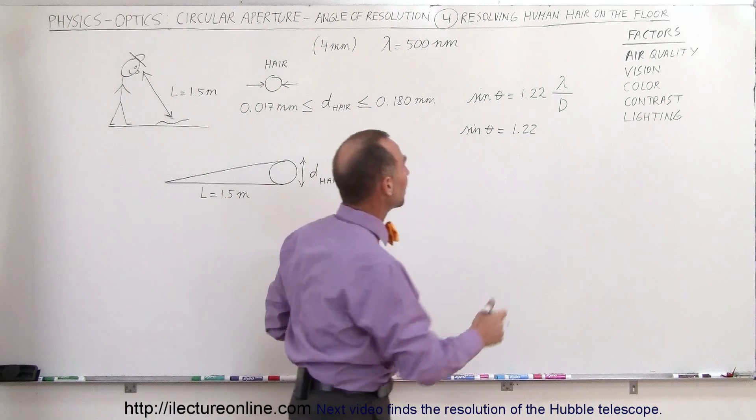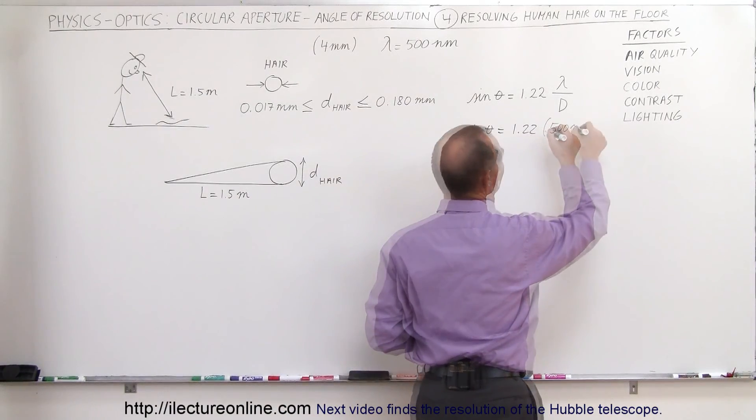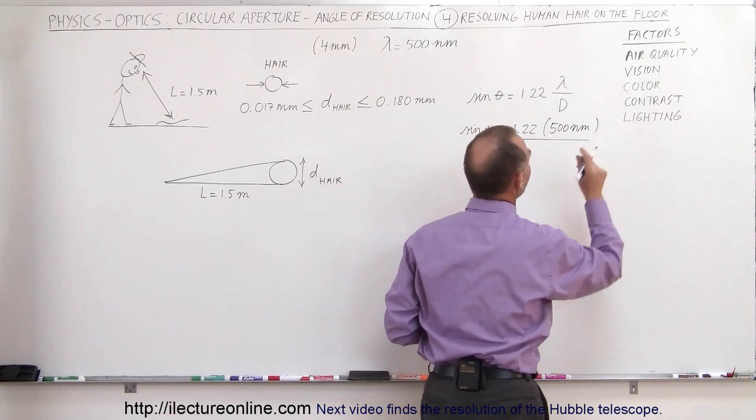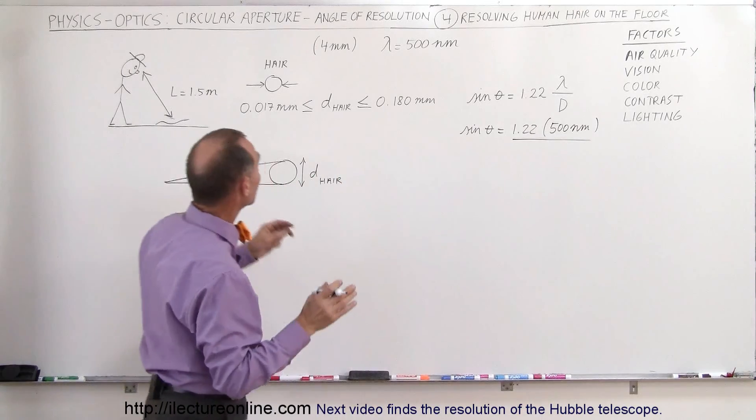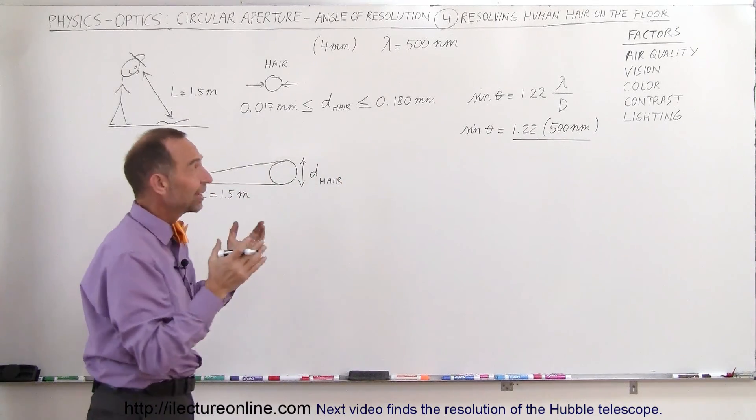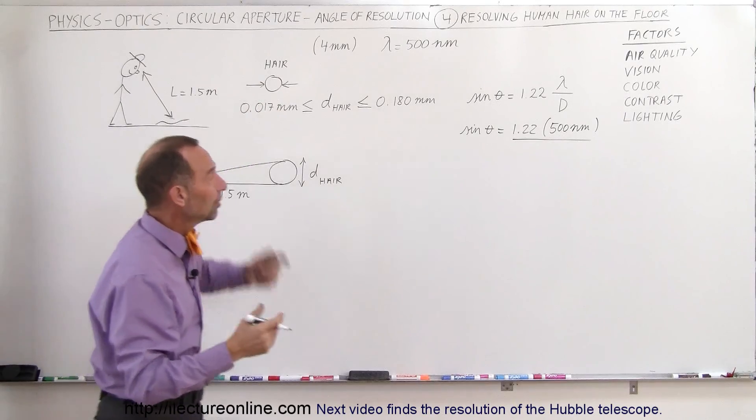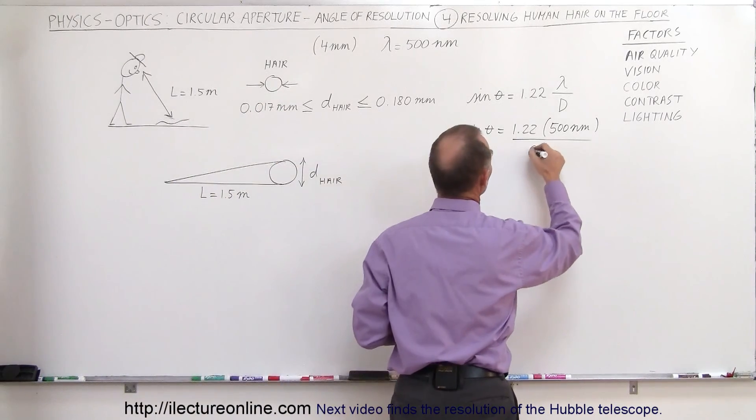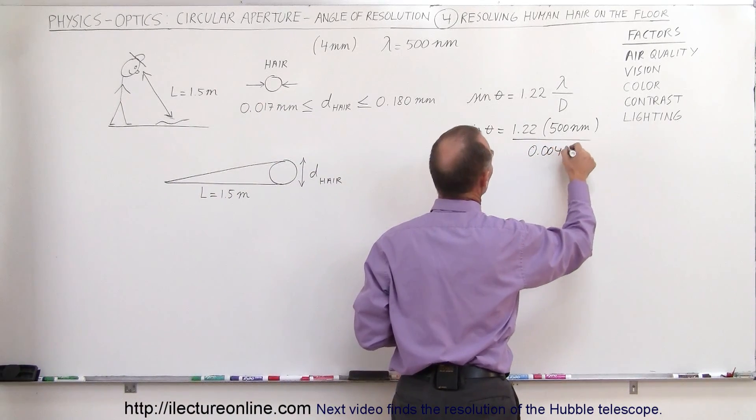Let's say a wavelength of 500 nanometers divided by the diameter of the aperture. For the human eye, the aperture varies, but let's say it's about 4 millimeters on average, or 0.004 meters.